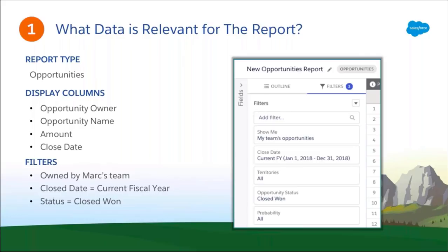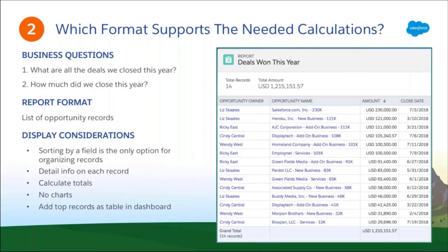Step one is determining what data is relevant. A lot of Mark's questions had to do with deals that were closed this year — which deals his team won, how much they were worth, who closed them, and how wins break down by quarter. These are all about opportunities, so the report type we want is Opportunities. For display columns, Mark probably needs the opportunity owner, the name of the deal, the amount, and the close date. We'll filter to only show deals owned by Mark's team that were closed and won this fiscal year.